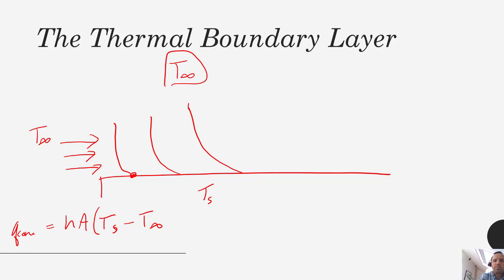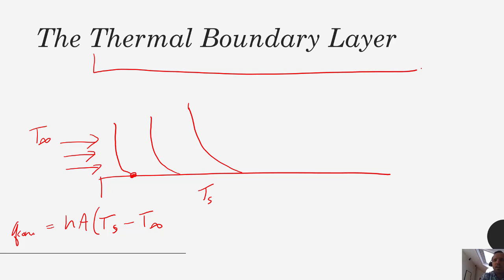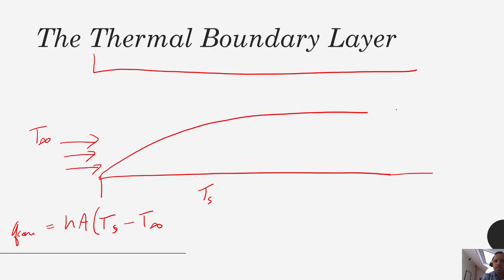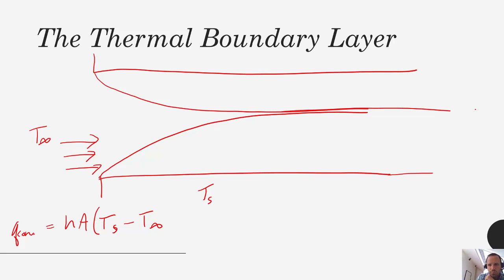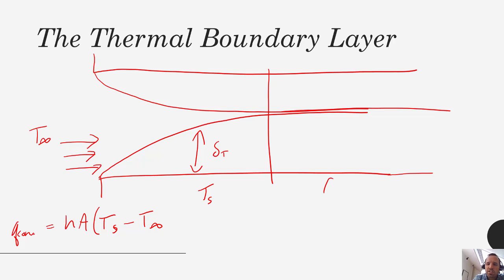It's different in internal flow. Let's say we had another flat plate on the top creating a parallel plate situation. As our thermal boundary layer grows, we're going to have another thermal boundary layer on the top growing as well. When those two converge we end up with what's called flow that is fully developed thermally. When that flow becomes fully developed thermally, things like our convective heat transfer coefficient will level off and stay at a constant value. Whereas in external flow the convection coefficient was always changing as the boundary layer grew thicker and as the Reynolds number changed.